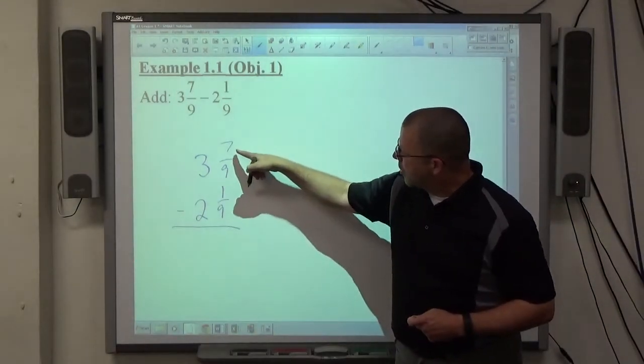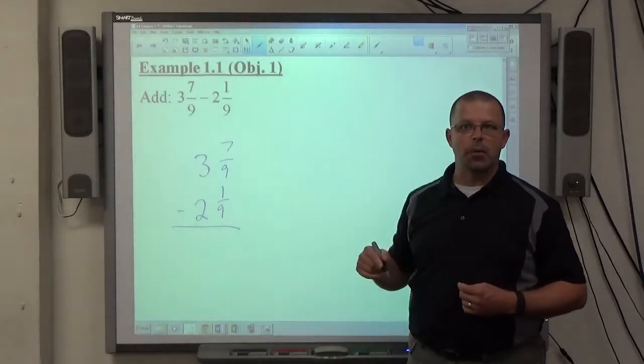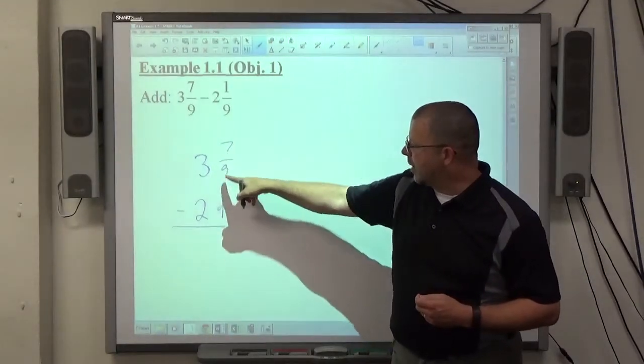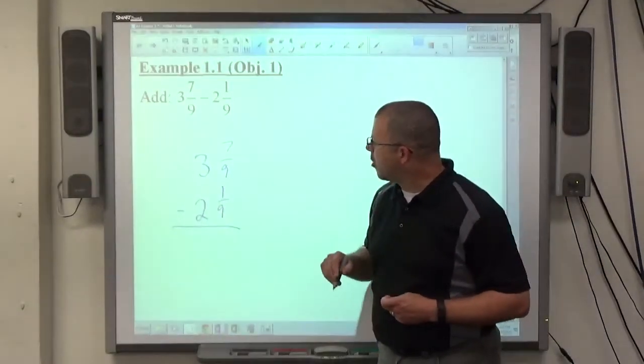So we are going to subtract the fraction part, 7/9 minus 1/9, which is big enough to subtract. That's the other thing you have to worry about with subtraction. Is this number big enough to subtract that number? It is, you're ready to go. If not, you're going to have to do some borrowing, which we're going to see in another example in a moment.